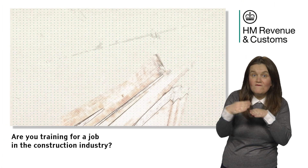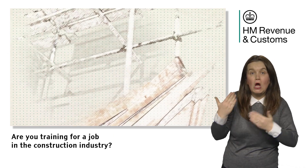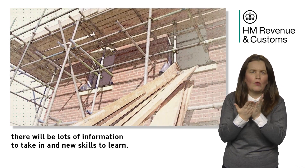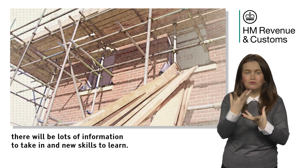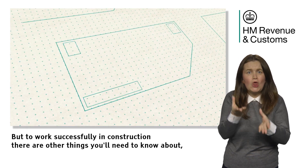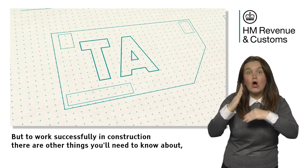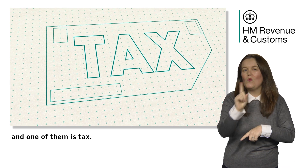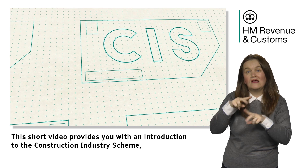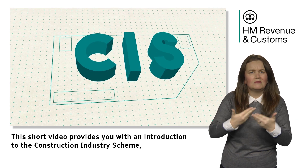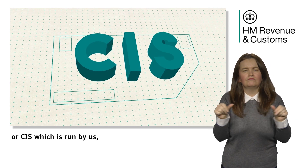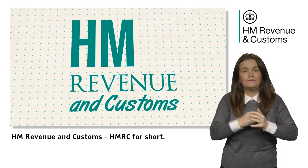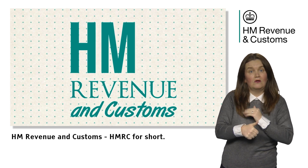Are you training for a job in the construction industry? If you're studying at college or part way through an apprenticeship, there'll be lots of information to take in and new skills to learn. But to work successfully in construction, there are other things you'll need to know about, and one of them is tax. This short video provides you with an introduction to the Construction Industry Scheme, or CIS, which is run by us, HM Revenue and Customs, HMRC for short.